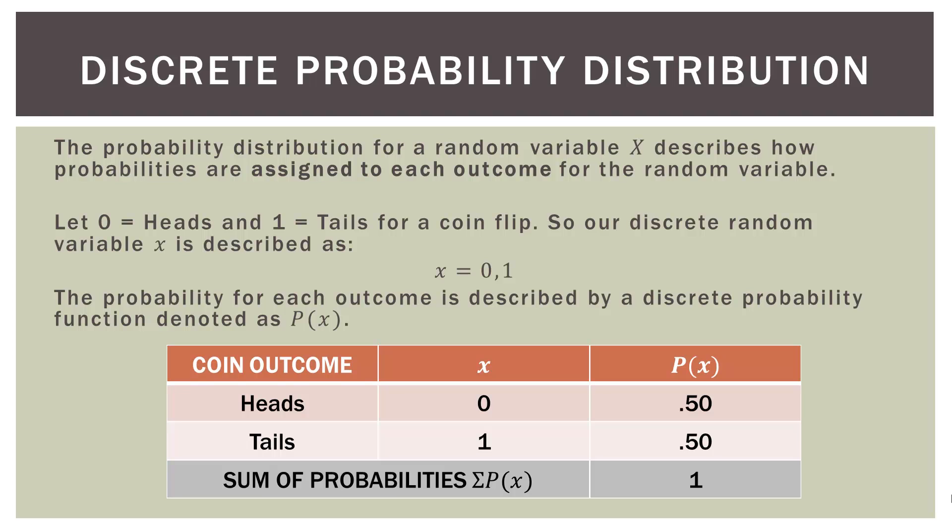Look at this chart — it's pretty simple. We have coin outcome: heads or tails, assigned values zero and one. On P of X, we assign each outcome its probability. The probability of heads is 0.5 and the probability of tails is 0.5. If you look at the gray line at the bottom, we have the sum of probabilities — the sigma sign — which means the summation of P of X. So the sum of our probabilities is 1: 0.5 plus 0.5 equals 1. That's an important fundamental property for all probabilities when we're talking about all outcomes of some experiment or event.